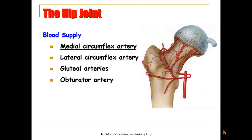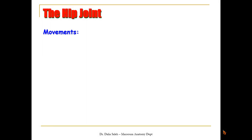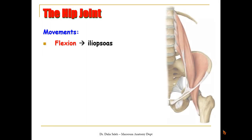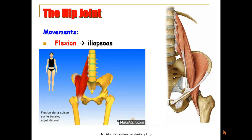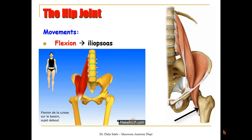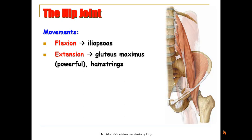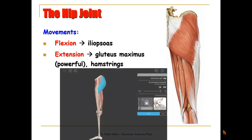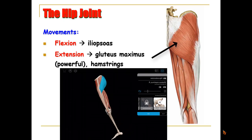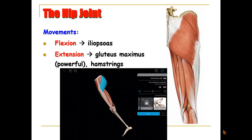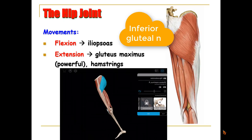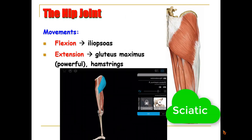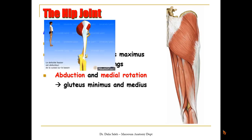The hip joint is a polyaxial joint, so it moves in more than one axis. Flexion is performed by the iliopsoas muscle, whose tendon passes under the inguinal ligament and inserts into the lesser trochanter of the femur. Extension is performed by the gluteus maximus, the powerful extensor of the hip joint, also assisted by the hamstrings. The gluteus maximus is supplied by the inferior gluteal nerve, while the hamstrings are supplied by branches from the sciatic nerve.